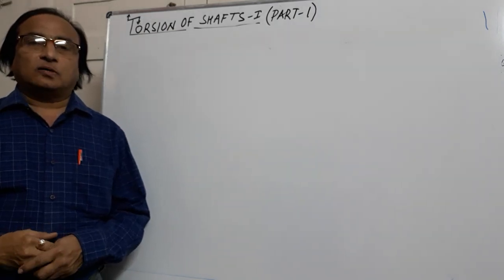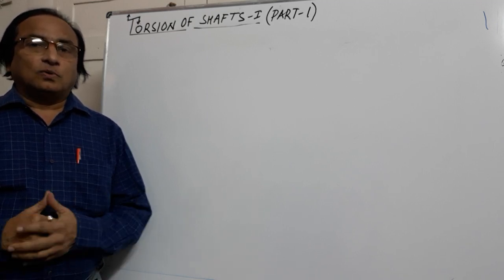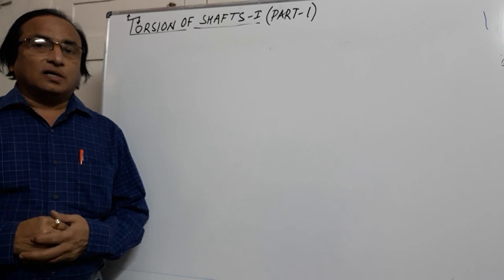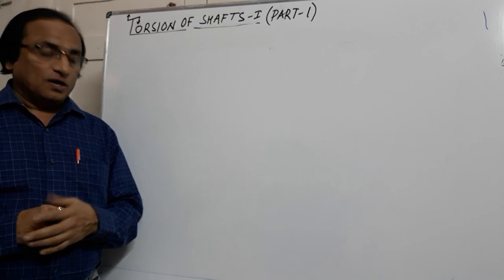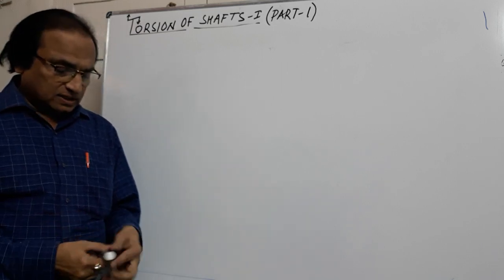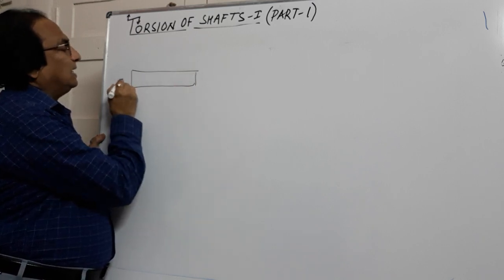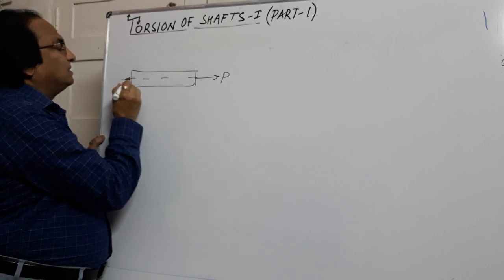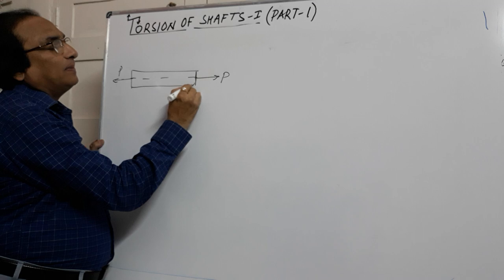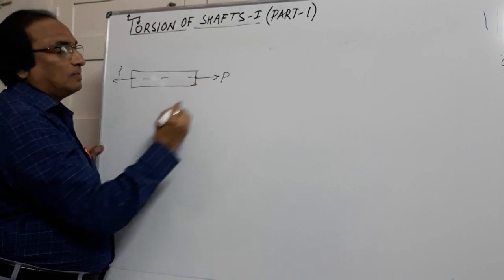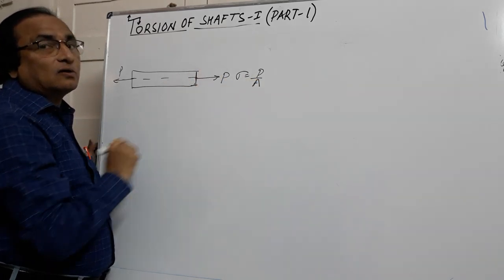Hello friends, my name is BK Kodhapre. In earlier videos we have seen what are the normal stresses and shear stresses. Now in this chapter we are going to study about the torsion of shafts. Normal stresses are nothing but the stresses acting on a body along the longitudinal direction, acting either tensile or compressive. The force acts perpendicular to the surface, so we call it normal stress — force divided by cross-sectional area.